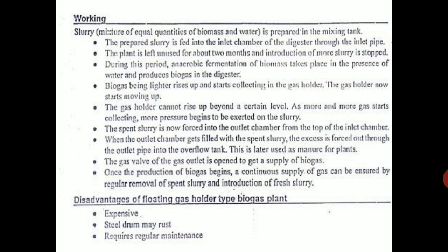The gas holder cannot rise beyond a certain level, and as more gas collects, pressure begins to be exerted on the slurry. Because of this gas pressure, the spent slurry is forced into the outlet chamber from the top of the inlet chamber. When the outlet chamber gets filled with spent slurry, the excess is forced out through the outlet pipe to the overflow tank, which is used as manure. The gas outlet valve is used to supply the biogas.